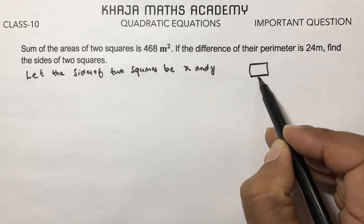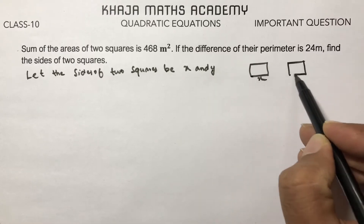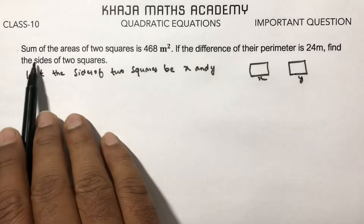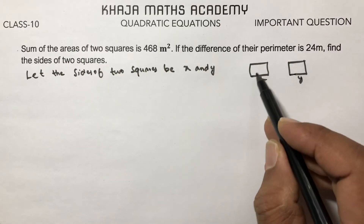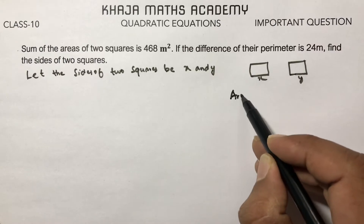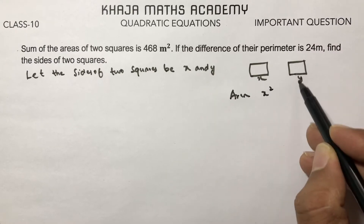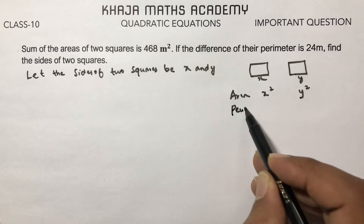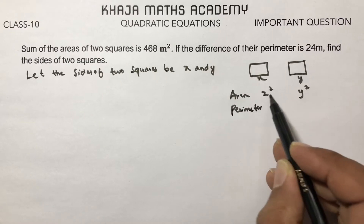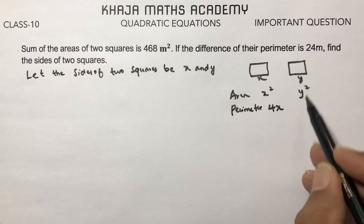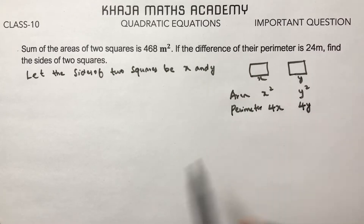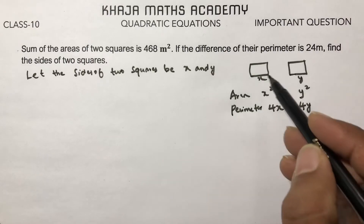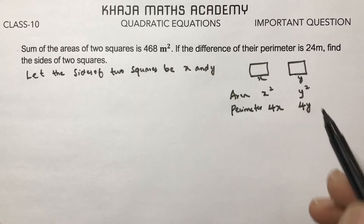Consider one side x and the other y. The area of the first square is x² and the area of the second is y². The perimeter of the first square is 4x and the perimeter of the second square is 4y.